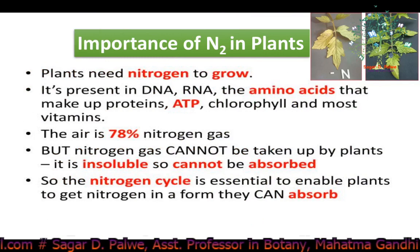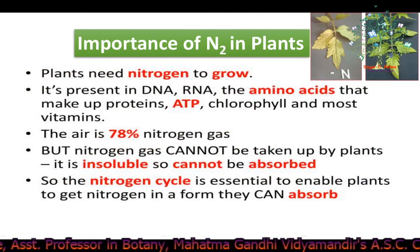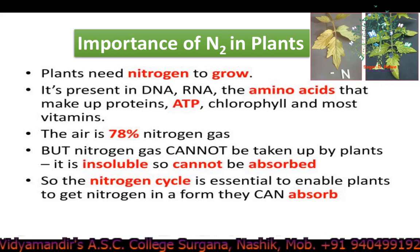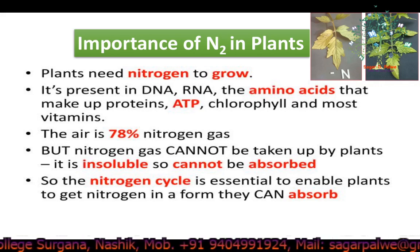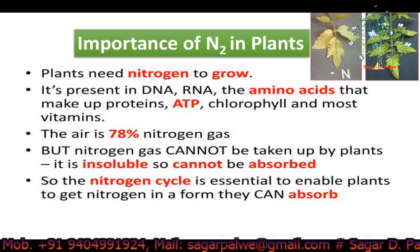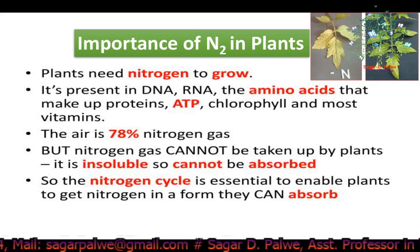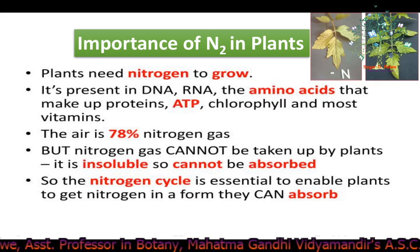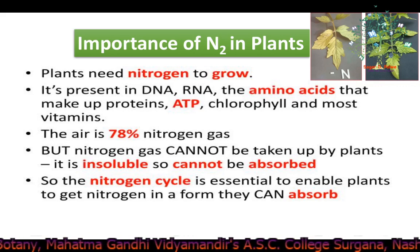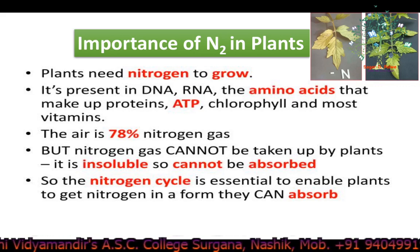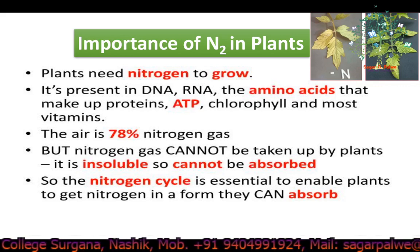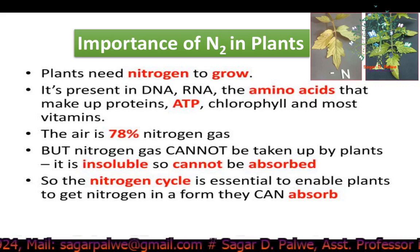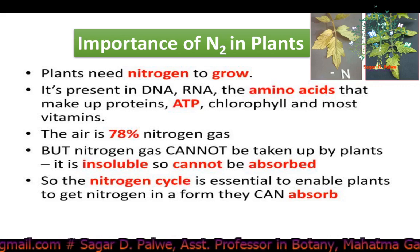Nitrogen deficiency causes yellowing or chlorosis of plant leaves. The yellowing will start in the older leaves and then proceed to develop on younger leaves if the deficiency continues. Plants with nitrogen deficiency will typically be shorter or stunted and grow slower than plants with sufficient nitrogen. Nitrogen stress also reduces the amount of protein in the seed and plant.